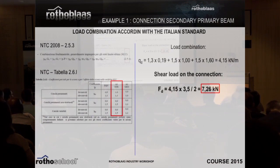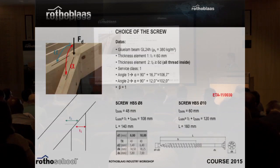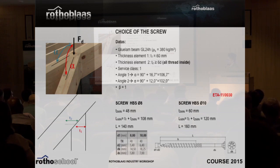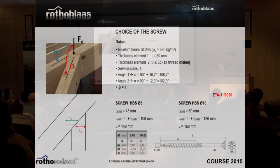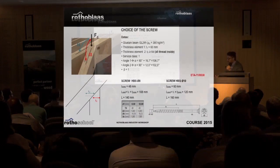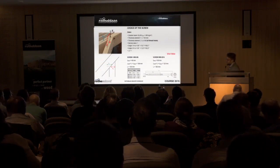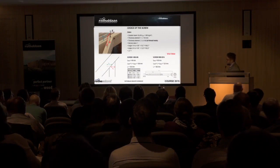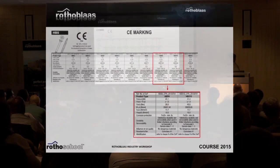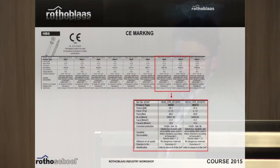This force is what we have to transfer through the screws. The force is acting vertically and we place the screws horizontally — a perfect shear situation. We made the example with two kinds of screws: the HPS 8 mm and 10 mm. We took the modern approach, referring to the ETA of the producer.